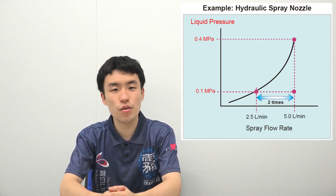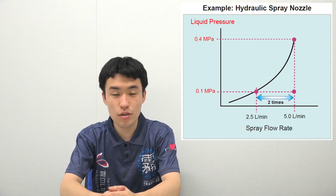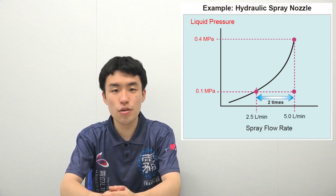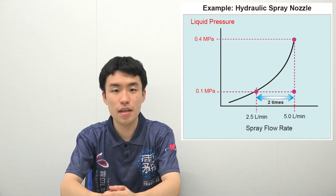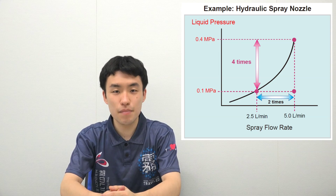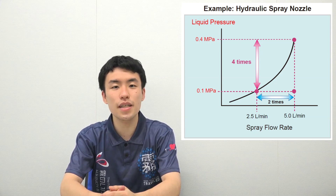For example, if you want to double the spray flow rate, it's pretty hard to do with a hydraulic nozzle that only uses liquid. The flow rate of hydraulic spray nozzles is determined by liquid pressure — to double the spray flow rate, liquid pressure must be increased by four times, which may require new equipment.